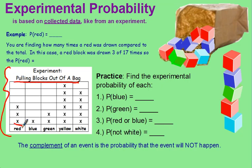Three times a red block was pulled out and put back in. One time a blue block was pulled out and put back in, and so on. Find the experimental probability of each based on the actual experiment. The probability of pulling out a blue, 1 out of 17. So with all of these experiments or some sort of collected data, you need to have your total. Remember that probability is expressed as a fraction or as a percent most of the time.